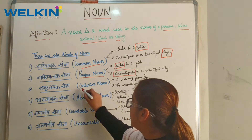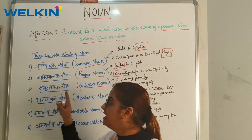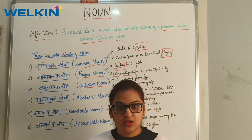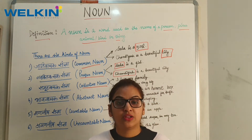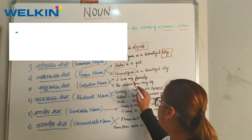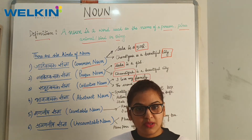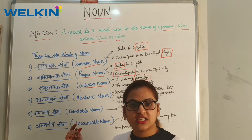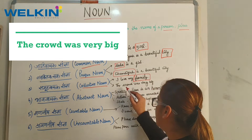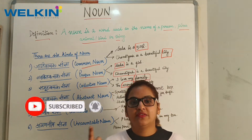Next is Collective Noun. Isko Hindi mein kehte hai Samuh Vachak Sangya. Collective noun is basically a group of people or animals — jis mein ek se zyada hon. Example: I love my family — 'family' is a collective noun because a family has more than one person. Another example: The crowd was very big — 'crowd' is also a collective noun, as a crowd is never just one person.